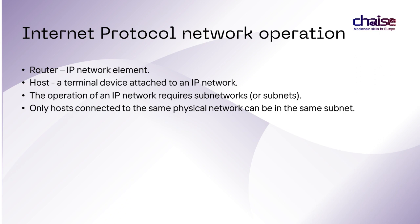The operation of the IP network requires a division of the network into subnetworks for technical and governing reasons. Only hosts connected to the same physical network — for example, the same local Ethernet — can be in the same subnet. Traffic from one to another subnet has to pass at least one router. We can spread the jurisdiction and management of smaller parts of the Internet to various institutions and therefore do not need a single centralized network operator to run the Internet.